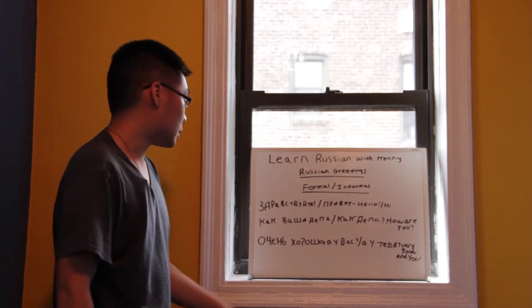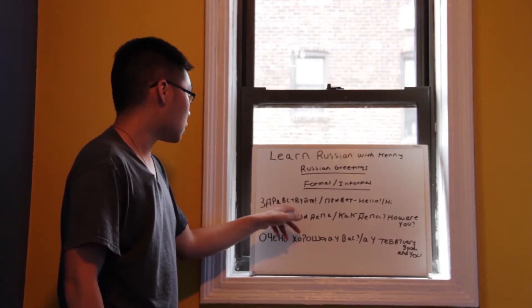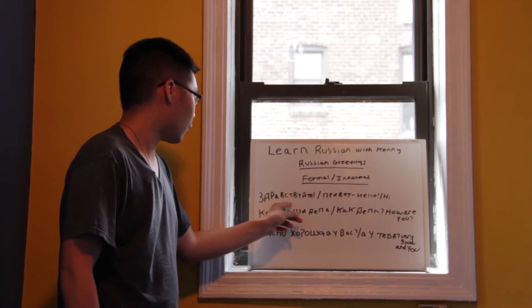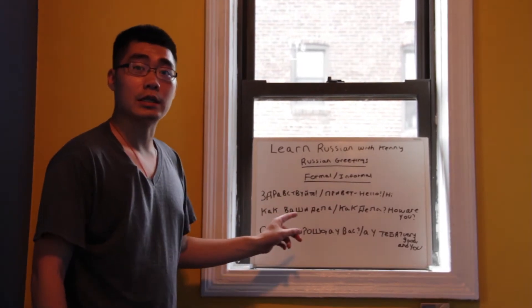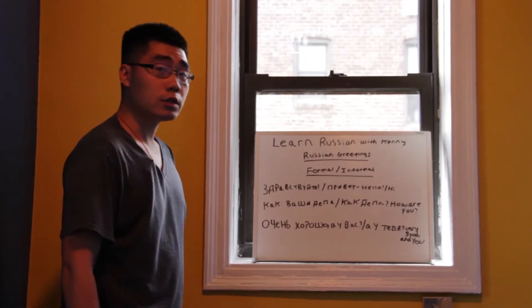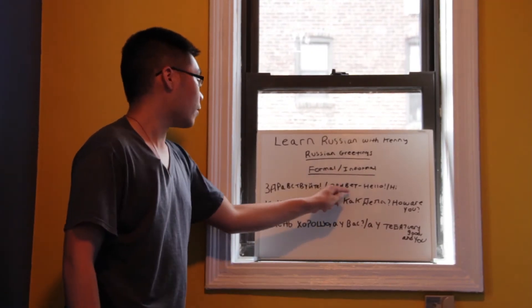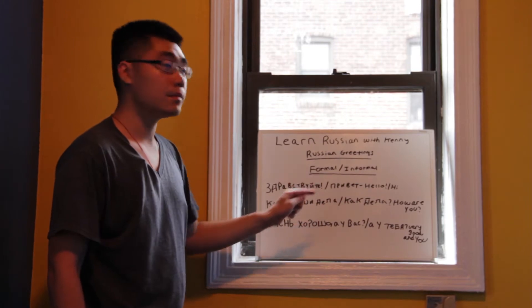The word for hello is simply Здравствуйте. Repeat after me. Здравствуйте. Здравствуйте. On the contrary, in the informal, Russians simply say Привет. Привет. Very good.